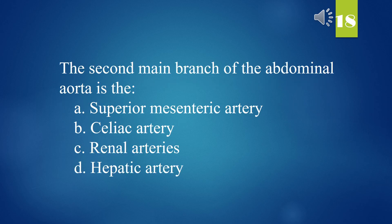The second main branch of the abdominal aorta is: A. Superior mesenteric artery. B. Celiac artery. C. Renal arteries. D. Hepatic artery. The answer is A. Superior mesenteric artery.